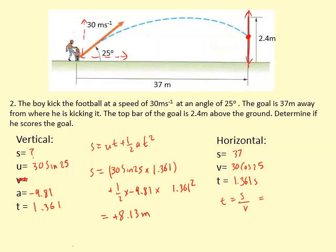This positive 8.13 meters means that it was 8.13 meters in the air, which means it's above the bar. So it doesn't score. So we need to write that as a conclusion. 8.13 is higher than top bar, so goal not scored.